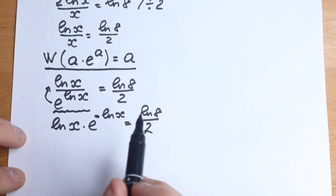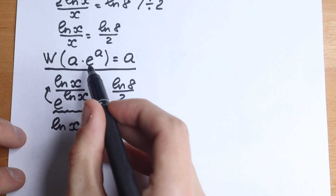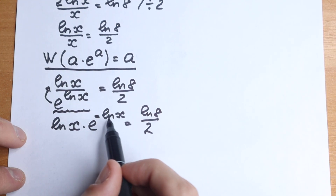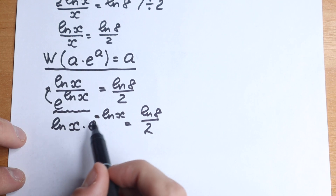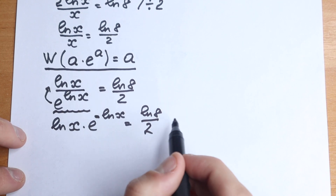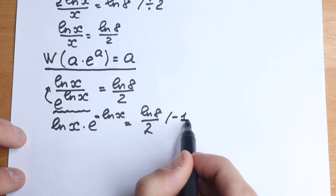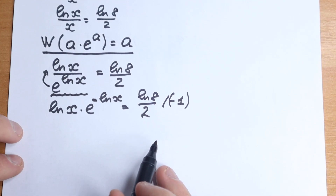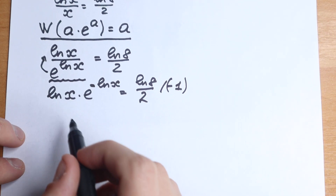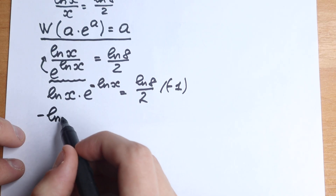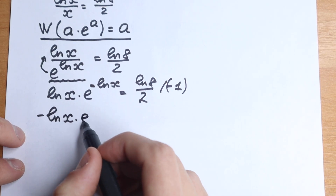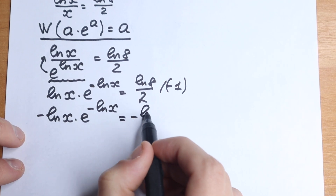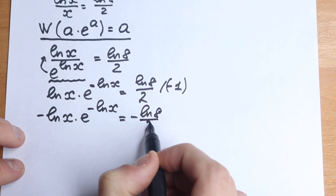Now look closely at this expression. We have e and the same variable expression appearing twice, but with a minus sign. So let's multiply both sides by minus 1. We get: minus natural log x times e to the power minus natural log x, equal to minus natural log 8 over 2.